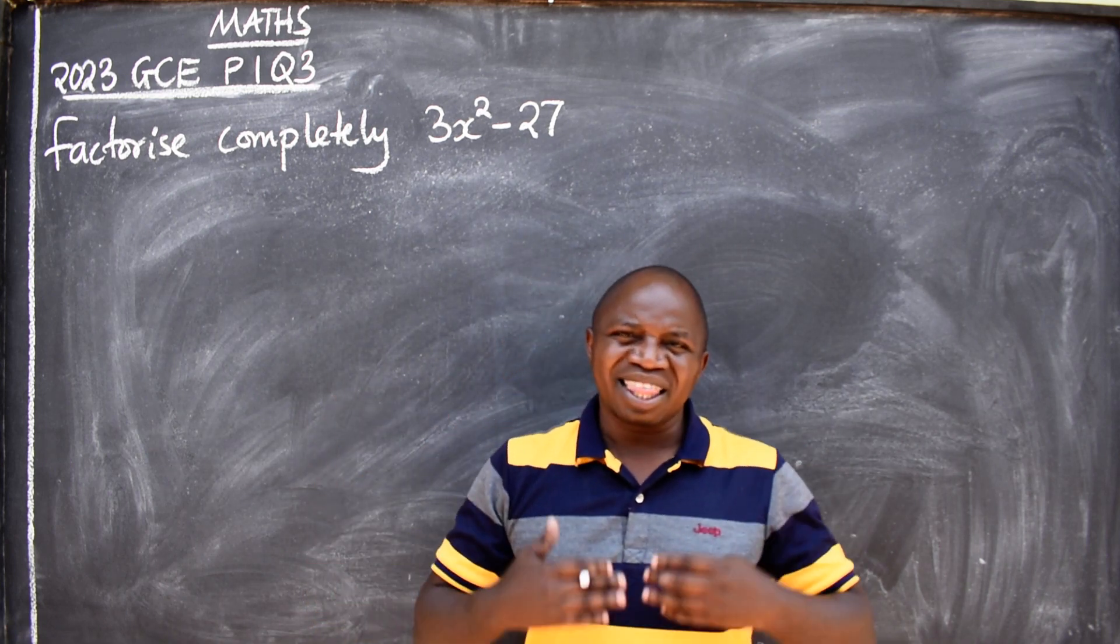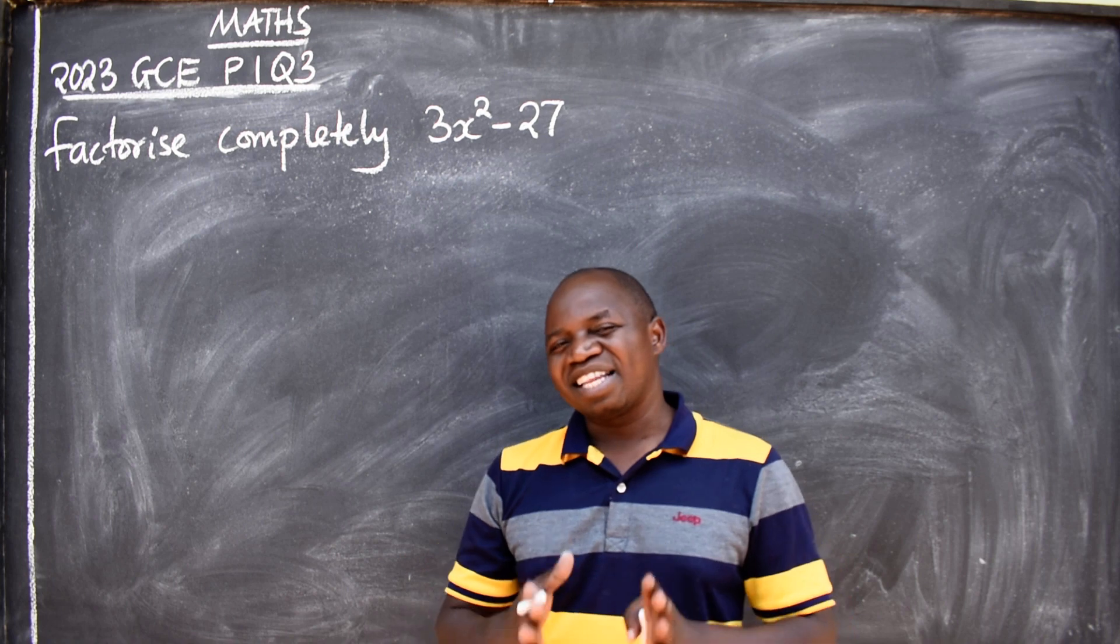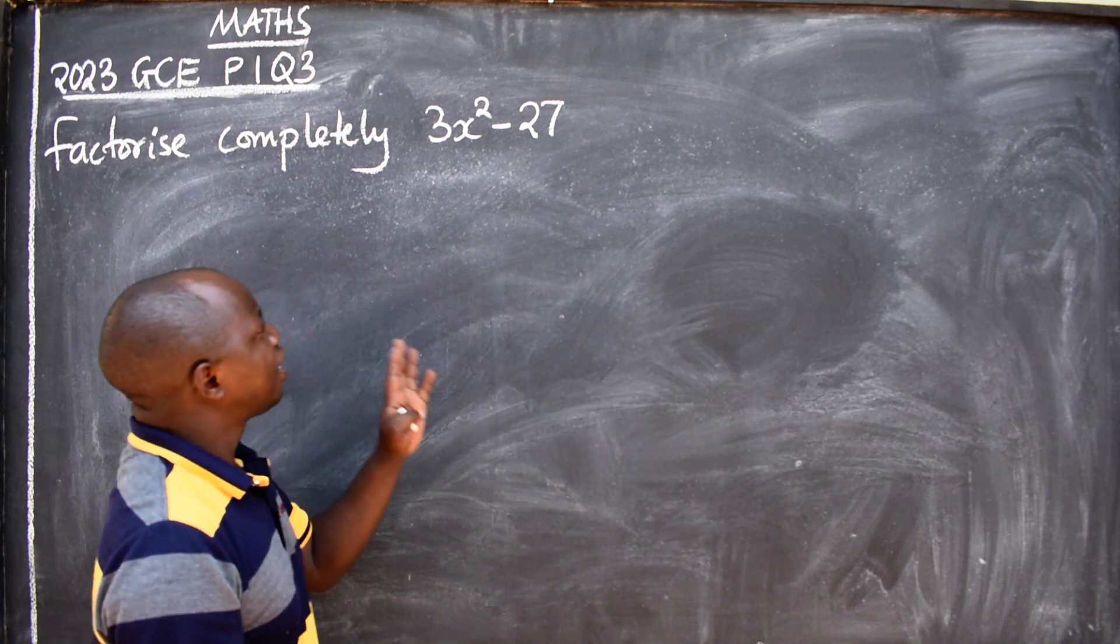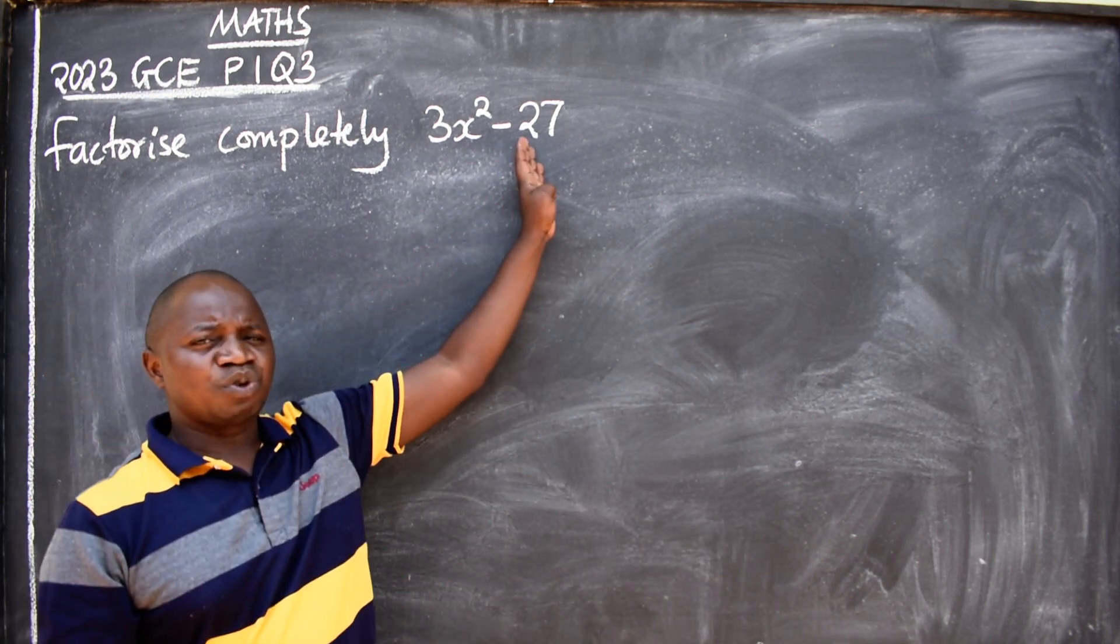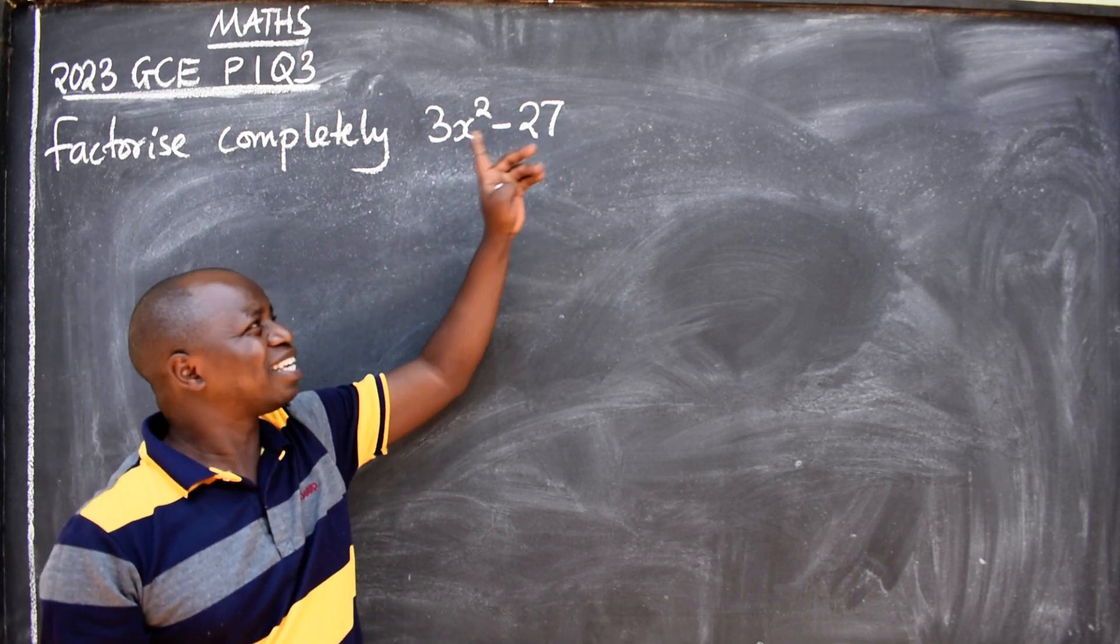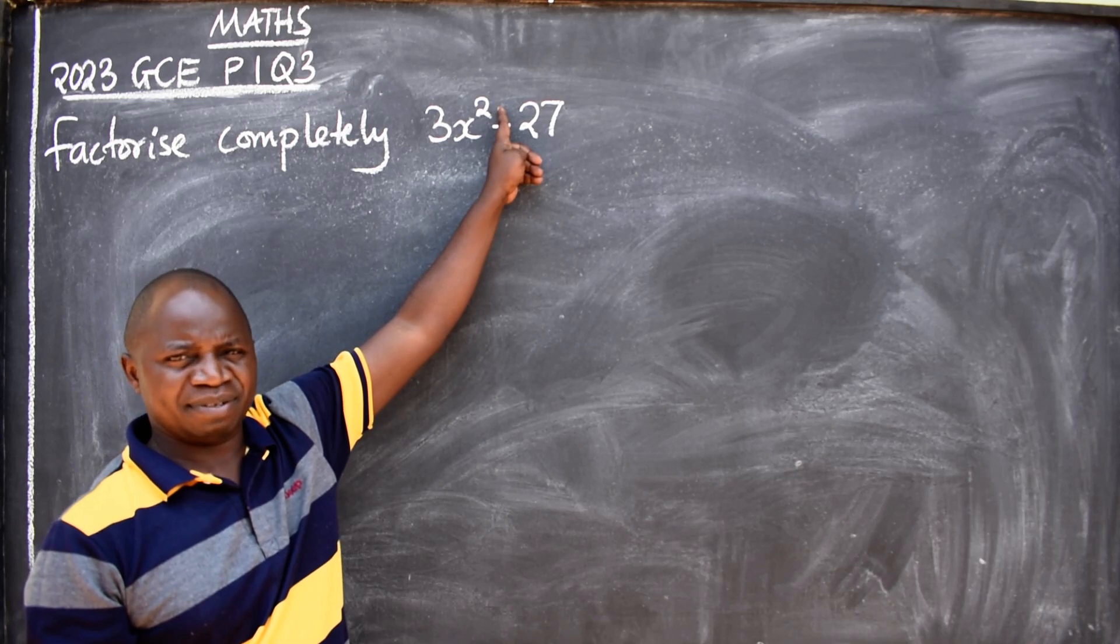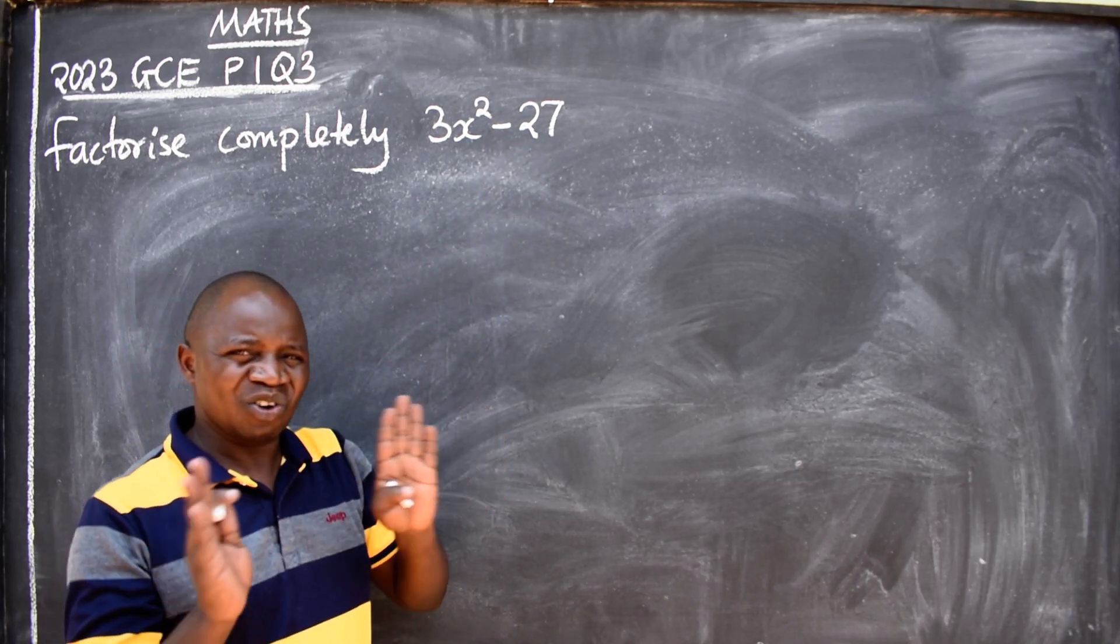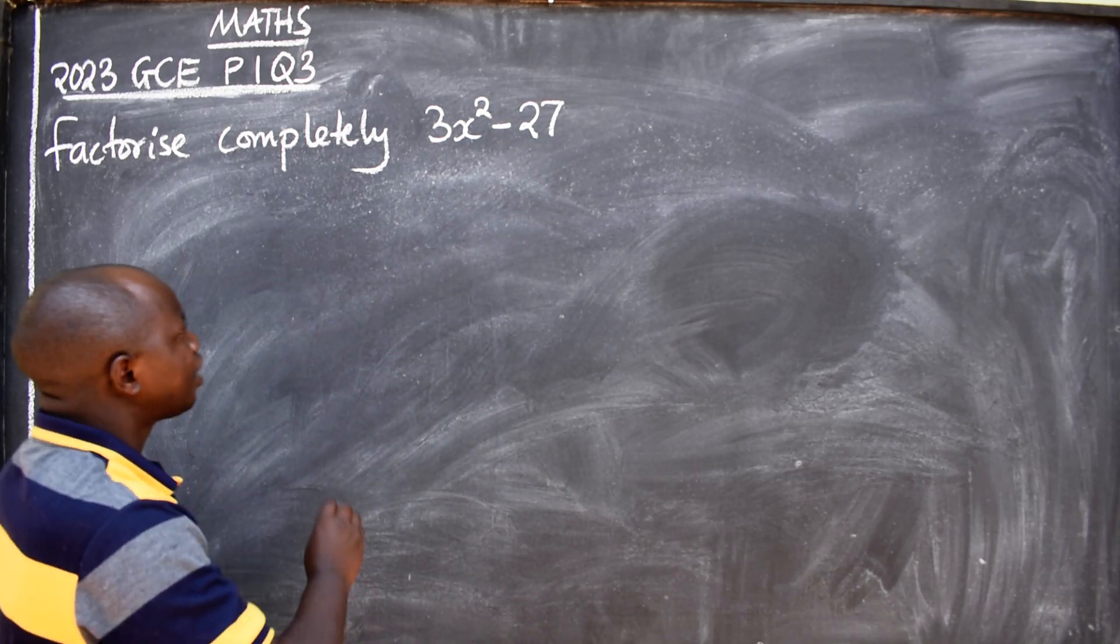The moment you remember that this is difference of two squares, under difference of two squares, in between the two terms there should always be a minus - no plus, only minus. So we have 3x² - 27.